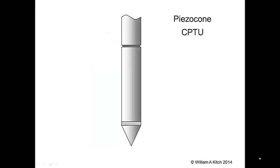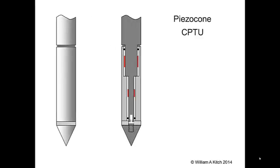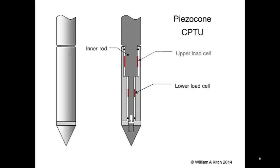Let's take a look at a cutaway section of the piezo cone and see how the measurements are made. Inside the probe, there is an inner rod that passes through the friction sleeve to the cone element. The cone is attached to the inner rod through a threaded connection. The inner rod is machined with a square shoulder part way down the shaft. The friction sleeve has a matching shoulder designed such that the friction sleeve bears on the inner rod at the shoulder. There are two load cells measuring vertical forces in the probe. The lower load cell measures the vertical force below the shoulder, and the upper load cell measures the vertical force above the shoulder.